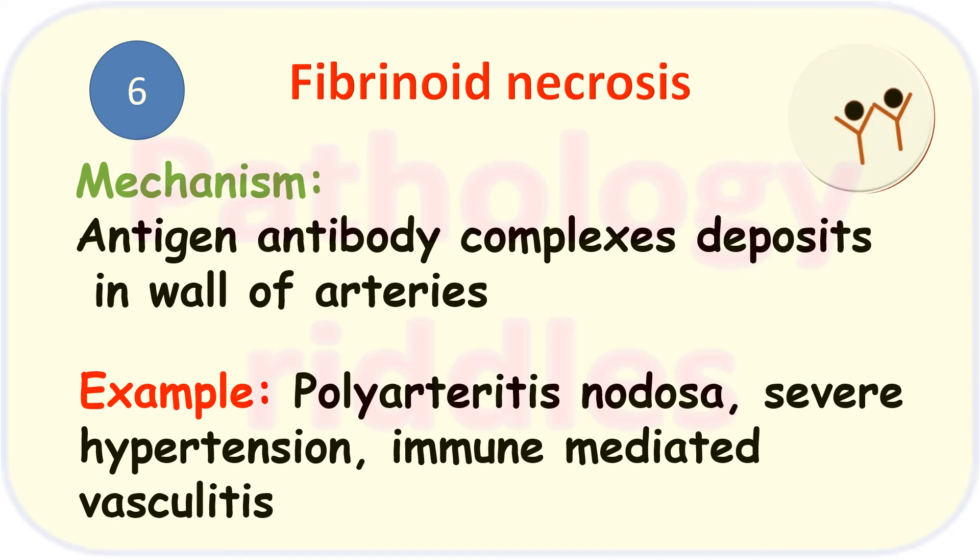The sixth type is fibrinoid necrosis. The mechanism is that antigen-antibody complexes are deposited on the wall of arteries, so fibrinoid necrosis usually happens in blood vessels. Examples are polyarteritis nodosa, severe hypertension, and immune-mediated vasculitis.